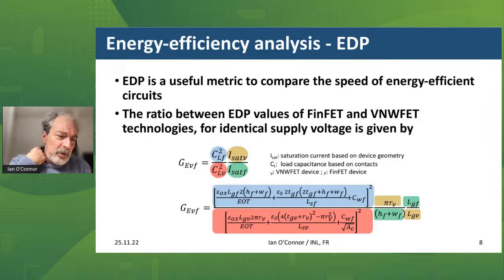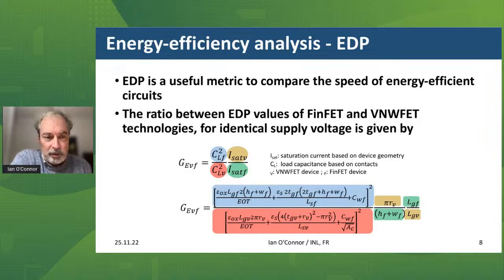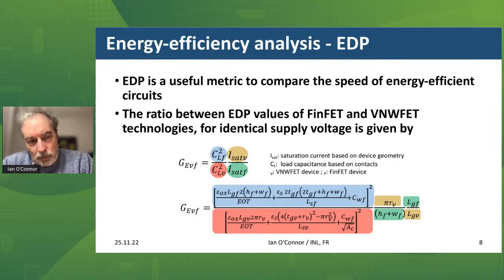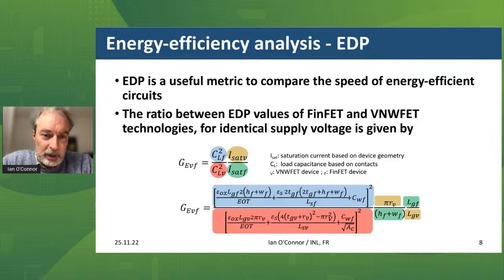One of the first things we wanted to look at was: what does this kind of device actually give us at the device level when building logic cells compared to a FinFET device? We did a quick analytical model of the energy delay product — a useful metric to compare the speed of energy-efficient circuits. We built a geometric model for both FinFETs and vertical devices, and compared the gain in the energy delay product (EDP) between FinFET and vertical nanowire FET devices.